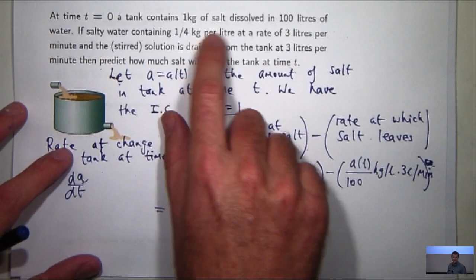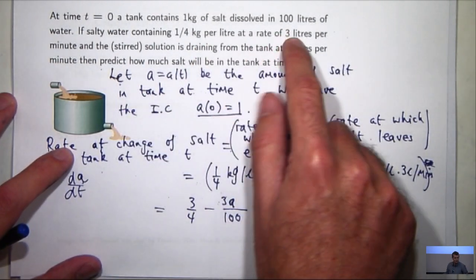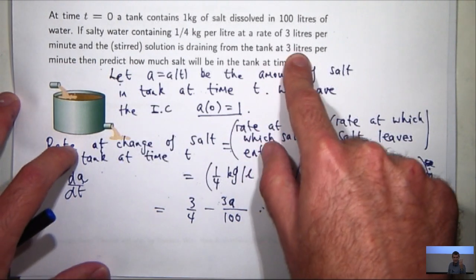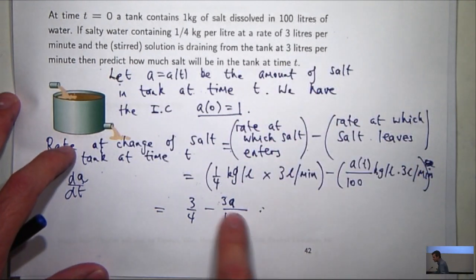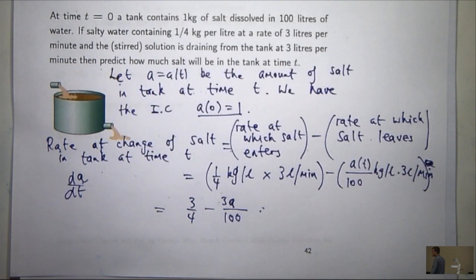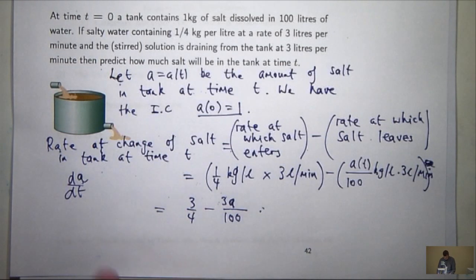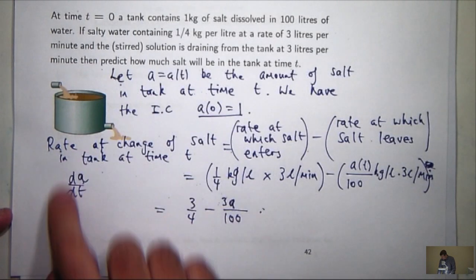Now if I change that problem a bit, for example, if the liquid is coming in at three litres and leaving at, say, I don't know, two litres, this wouldn't be a constant anymore. So you have to think carefully about what's the volume of fluid in the tank at time t. But for this one, it's fairly simple.